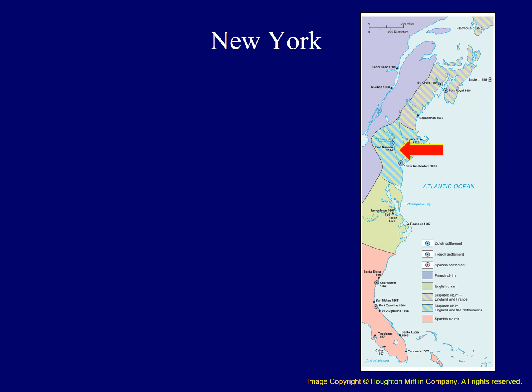The important early European colonizers in New York did not come from England, Spain, or France, but instead from the Netherlands. Dutch claims to this region stemmed from the explorations of Henry Hudson, who in 1609 sailed up the river which now bears his name, as shown on the map. In 1614, Dutch traders established Fort Nassau near the present-day city of Albany. Later in the 1620s, the colony of New Netherland was founded on Manhattan Island.